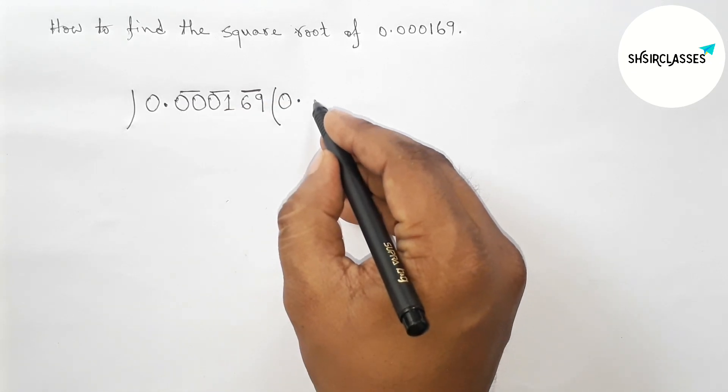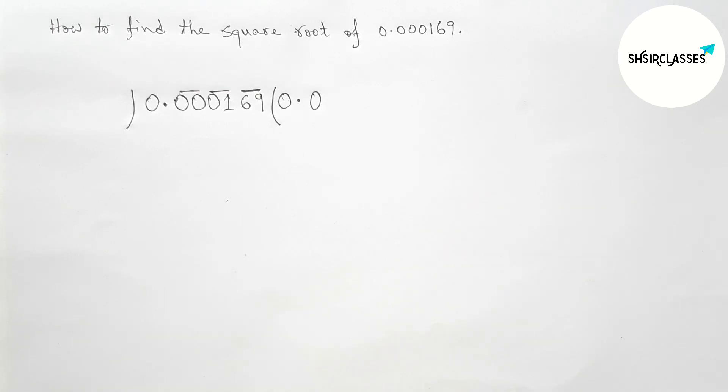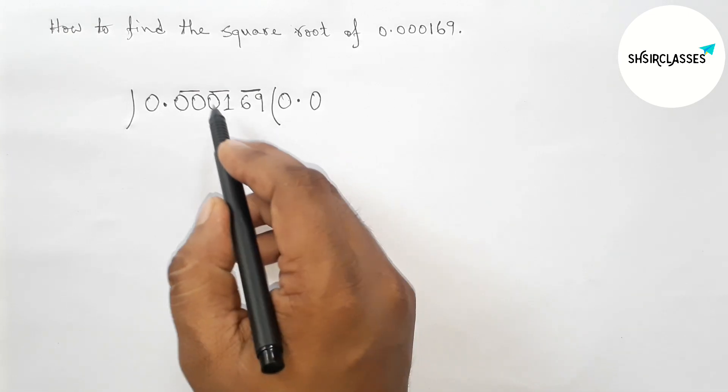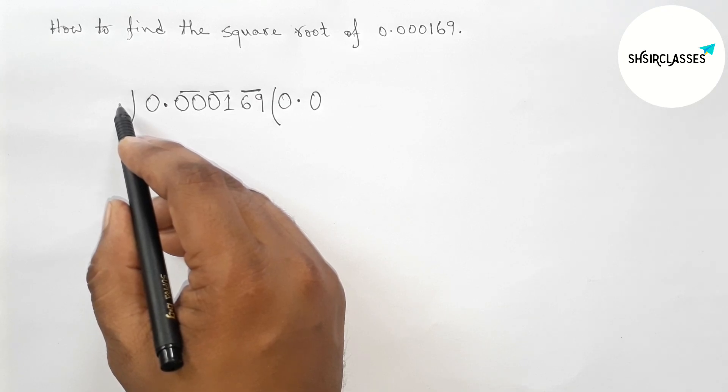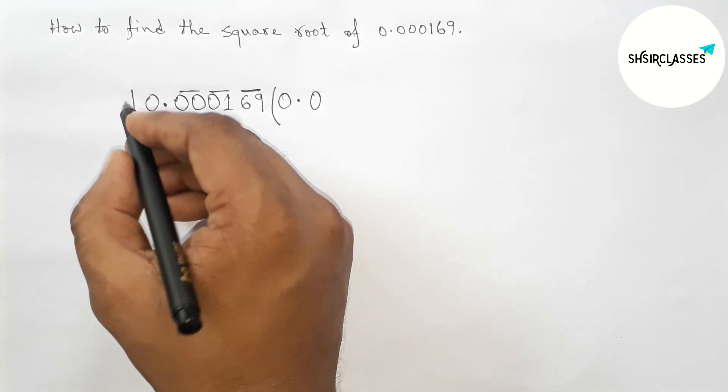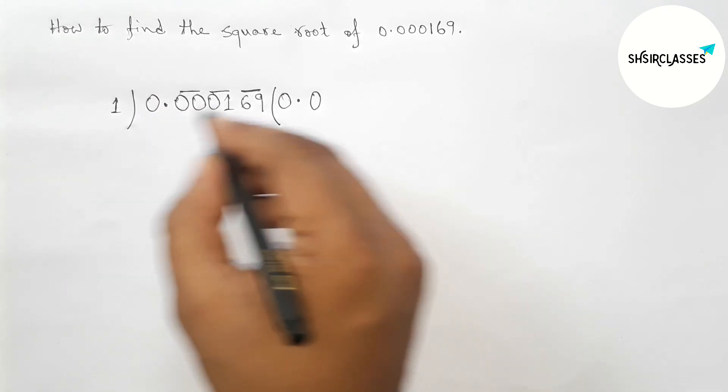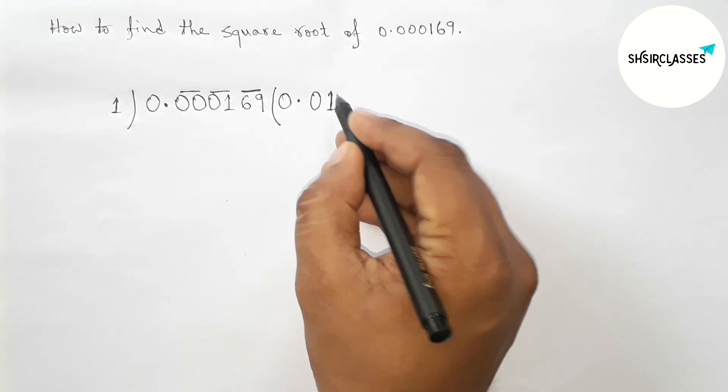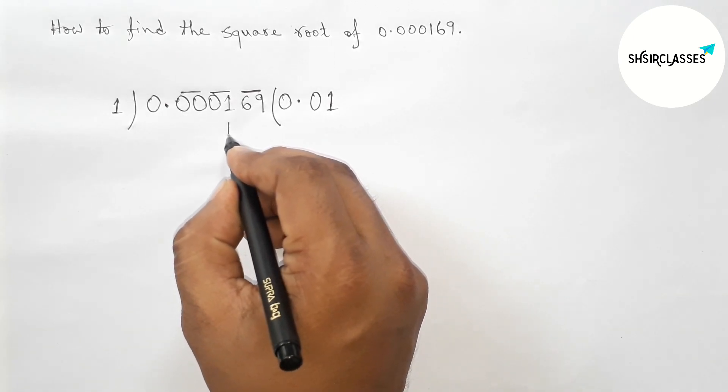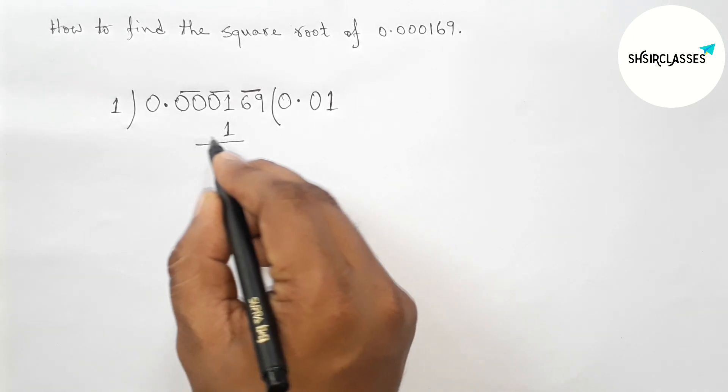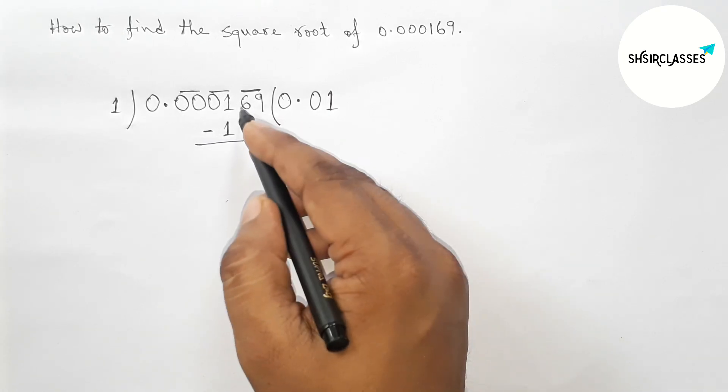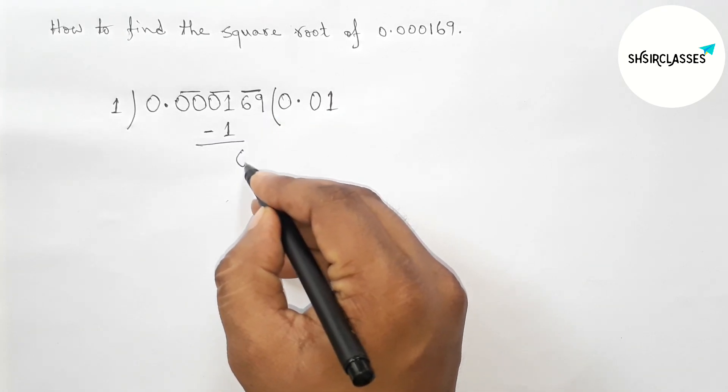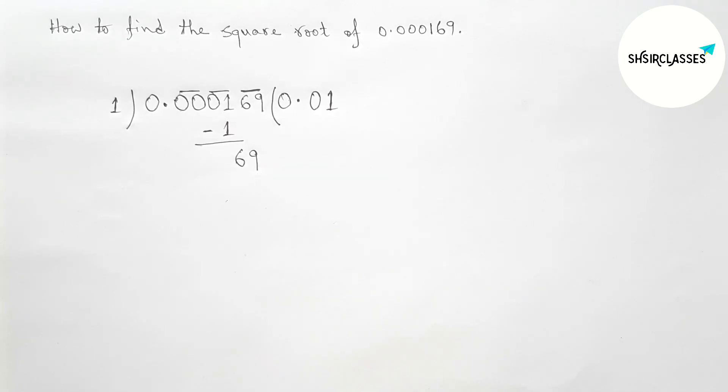For this pair of 0, we can write here 1, so 1 times 1 equals 1. Now taking the second pair, so 01. We have to choose a number and multiply by that number. First taking here 1, so 1 times 1 equals 1. Next, subtracting this, we get 0. Now write down here the third pair, 69.